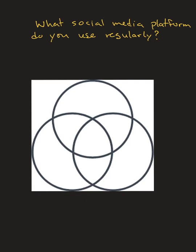In our previous Venn diagrams we had two sets and two circles. Now we're going to look at Venn diagrams where we have three sets and therefore three circles. We're not doing anything with numbers in this video — we're just going to look at each section of the Venn diagram and get an idea of what each section represents.